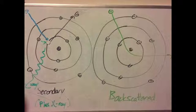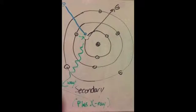When the electron beam interacts with the surface of the sample, different types of electrons can be emitted. The first are secondary electrons, where inelastic scattering occurs as the incident electron knocks out one of the core electrons.